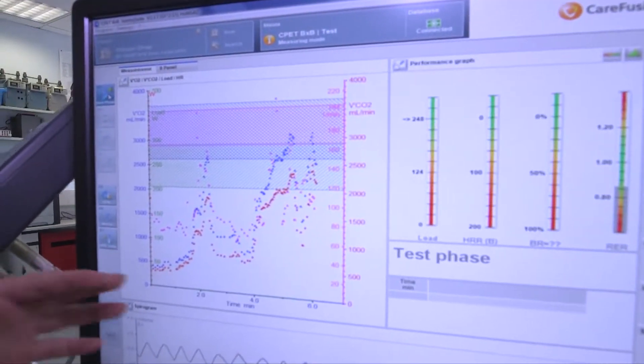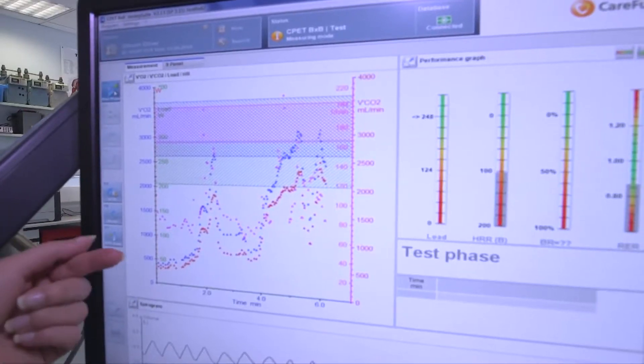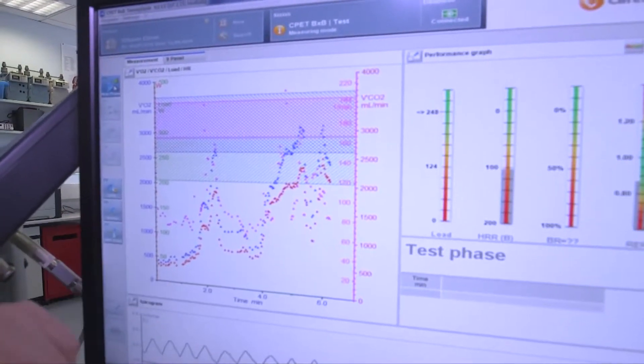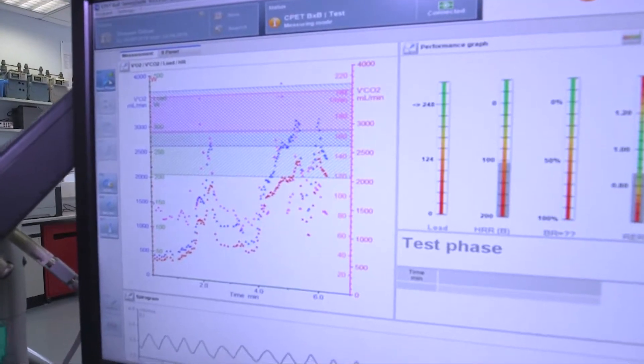So if we look at the actual data, the red data represents the carbon dioxide and the blue data represents the oxygen.